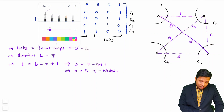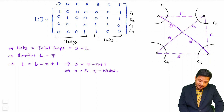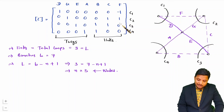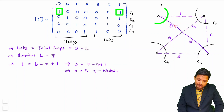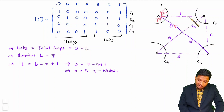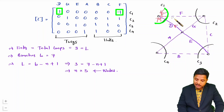Now I will explain how to assign direction. With c1 we are having one twig that is d, and one link that is f. Let us say d is having direction inward. The cut set direction is in the direction of the twig — so the cut set direction will be inward. Now f has value minus 1, so f is having opposite direction to the cut set direction. Since cut set is inside, f should be outside. So now we have the direction of f.